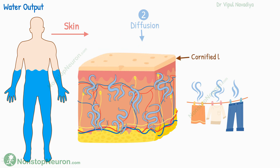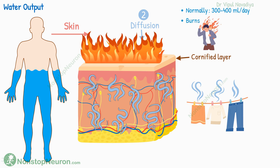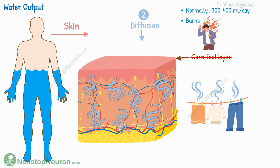Similarly, our body tissues also tend to get dry by evaporation. Normally, this loss is kept to a minimum by the cornified layer of the skin, which provides a very strong barrier against diffusion. So normally water loss this way is only about 300 to 400 milliliters per day. But in conditions like burns, this layer is destroyed, so the rate of evaporation increases and more water is lost — even up to 5 liters per day. So adequate fluid must be given to such patients.